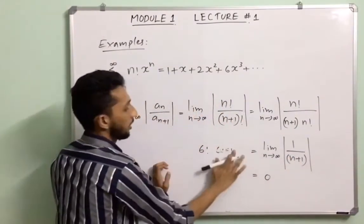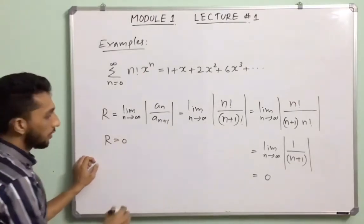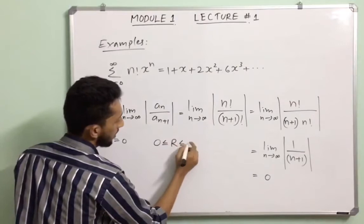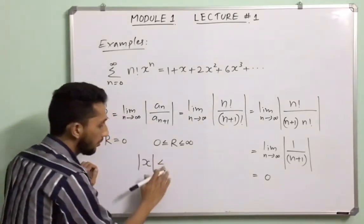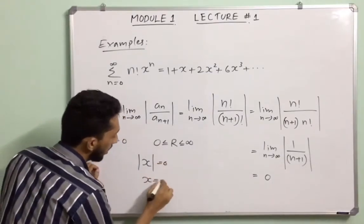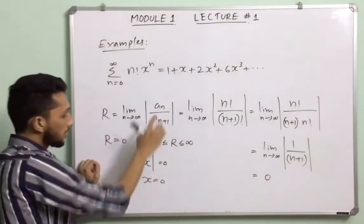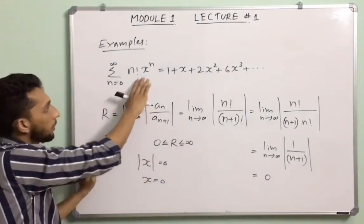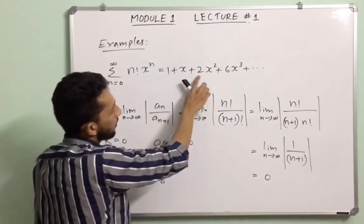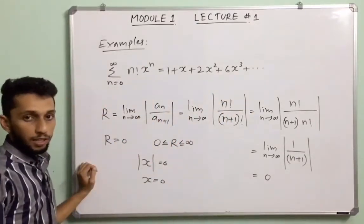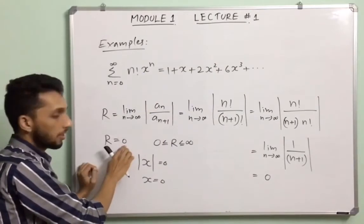As n increases to infinity, 1/(n+1) approaches 0. So the radius of convergence R equals 0. Since R = 0, the series only converges at x = 0. Substituting x = 0 gives 1 plus 0 plus 0 plus … = 1, which is a finite number. So the power series converges only at x = 0.